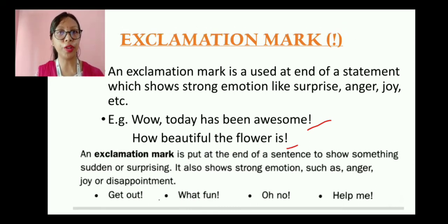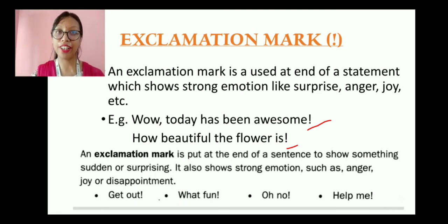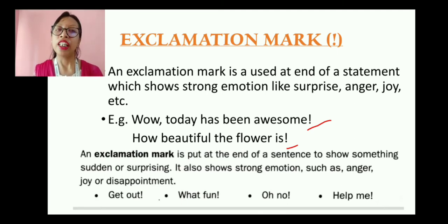This cutout is from your textbook. An exclamation mark is put at the end of a sentence to show something sudden or surprising. It also shows strong emotions such as anger, joy, or disappointment. Now the examples: 'Get out!' — when somebody is angry, especially a teacher or your parents, they say 'Get out!' — it is an emotion of anger, so we give an exclamation mark. 'What fun!' — you played a game, had an awesome time with friends and really enjoyed it, so you say 'What fun!' and give the exclamation mark.